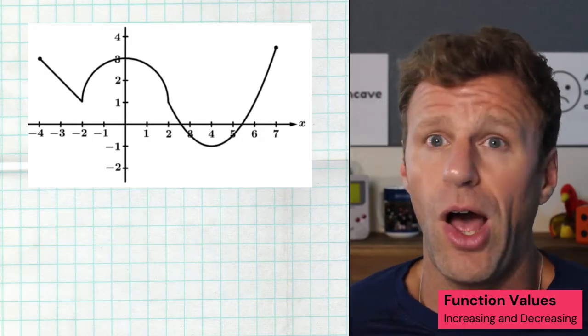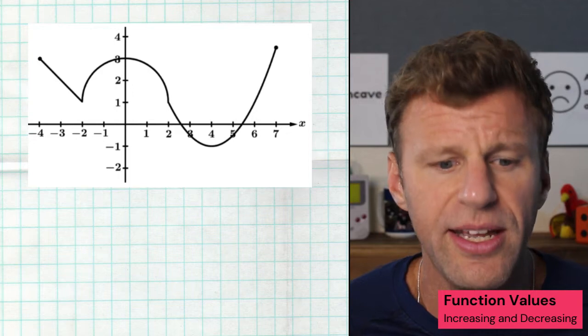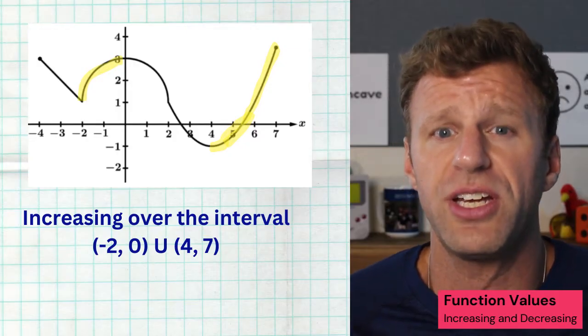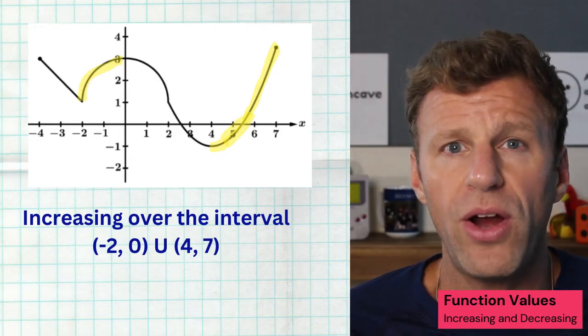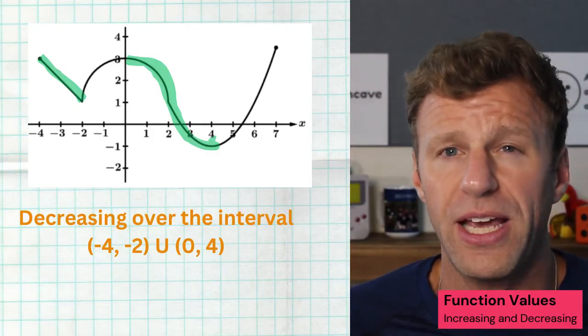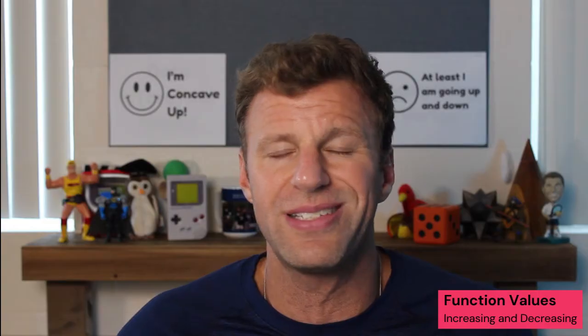Taking a look at this graph, we can ask over what intervals is the function increasing? We see shaded in yellow where the function values are going up: from negative two to zero the function is increasing, and then from four to seven it's increasing as well. Where are the function values decreasing? Shaded in green, we see that the function values are actually going down from negative four to negative two, and they're going down from zero to four. Now, do you need brackets or parentheses when talking about increasing or decreasing? That's a little bit of a debate in the pre-calculus world, but I'll give credit for either. It's more important that you understand how to find that interval.